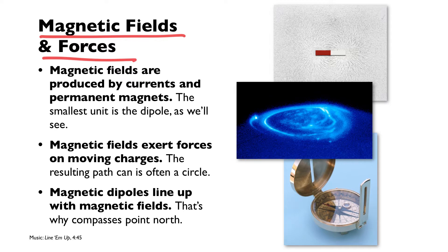If you have a permanent magnet, you know that makes a magnetic field. But another thing that creates a magnetic field is a current. We're going to look at how to calculate the magnetic field from different arrangements of currents.